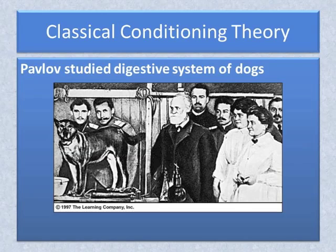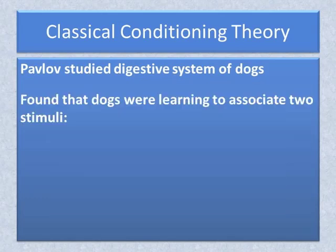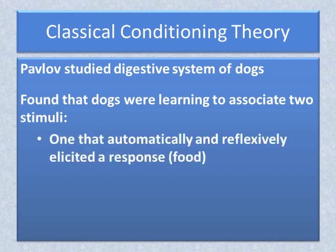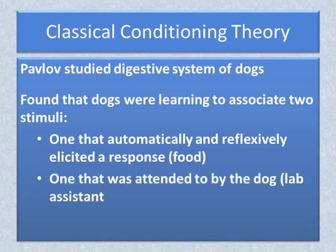That was interesting to him because the salivation by the dog indicated that the hungry animal expected to eat even though it was not presented with food. As he investigated this event, he discovered that the dogs were associating his assistants with food — that is, the dogs were associating two different stimuli. One stimulus, the food, would automatically and reflexively elicit the response of salivation when presented to a hungry dog. The second stimulus, the lab assistant in a white coat, was simply an object attended to by the dog. This process of classical conditioning will be the focus of a more detailed description in the second presentation.